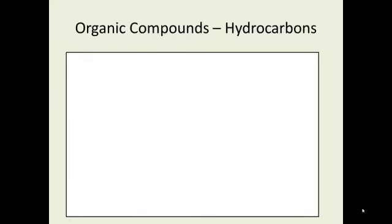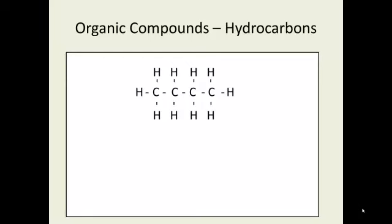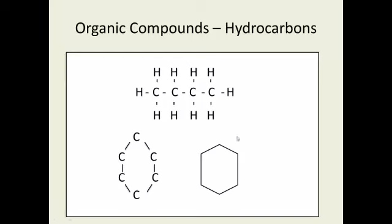Hydrocarbons are any molecules composed strictly of carbon and hydrogen. Here's an example of a hydrocarbon — nothing but carbon and hydrogen. The covalent bonds are nonpolar because there's no oxygen, no nitrogen. This is your basic organic molecule. They can form a line or a chain, and can also flip around to form circles. Organic chemists will often abbreviate it and just draw the shape of the molecule, where each point represents a carbon.